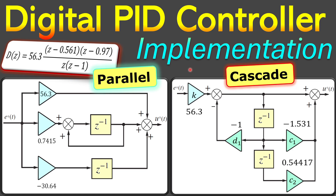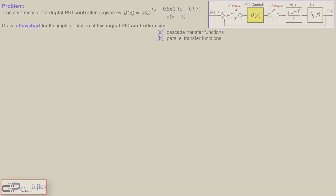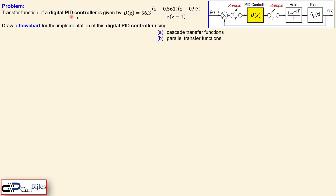Welcome back to a new video about digital controller implementation. This is example number six and we will discuss the PID control realization in digital format. We have the flowchart configuration and will discuss both the parallel and the cascade configuration. We have the following transfer function of a digital PID controller given by this expression in the z-domain.